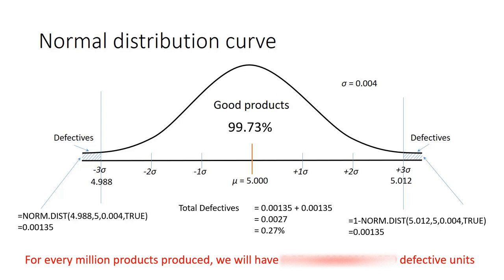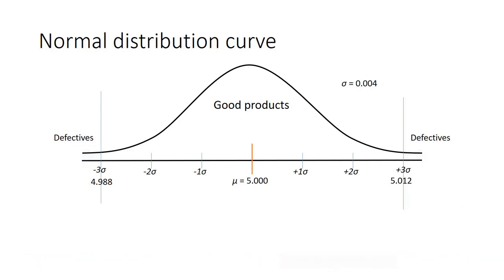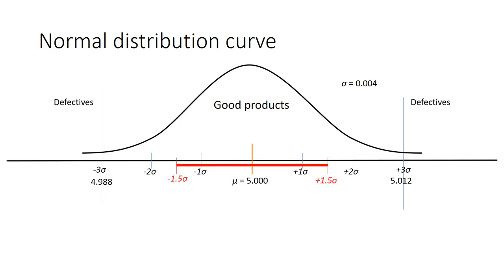Remember, this is the ideal case where no special causes of variation are allowed. However, in practice, special causes will shift our mean from exactly 5.000 by plus or minus a few units. There is a general agreement on a somewhat arbitrary rule that assumes a plus or minus 1.5 standard deviation shift of the mean. We are going to allow the mean to shift plus or minus 1.5 standard deviations on either side.